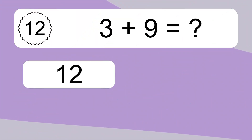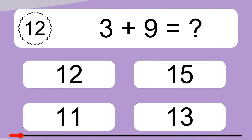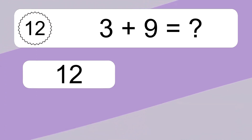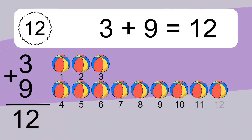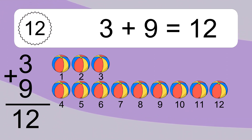3 plus 9 equals what? 1, 2, 3, 4, 5, 6, 7, 8, 9, 10, 11, 12.